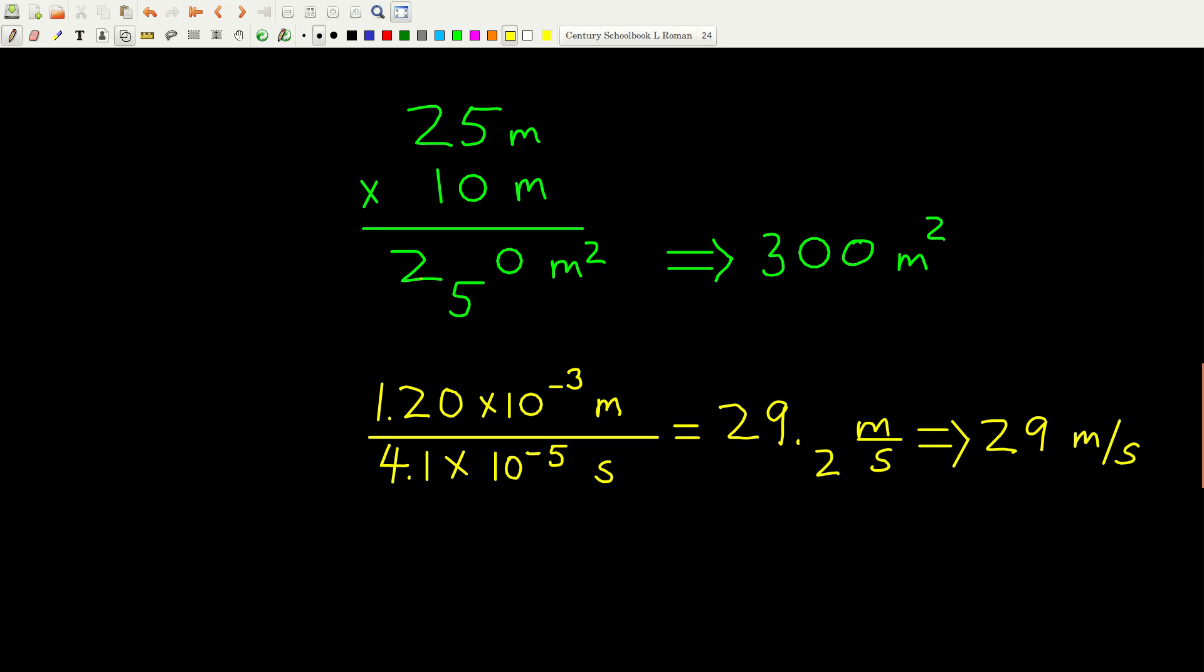Well, that means that this place here is going to be our only significant figure. So 250 to one sig fig rounds to 300 meters squared.